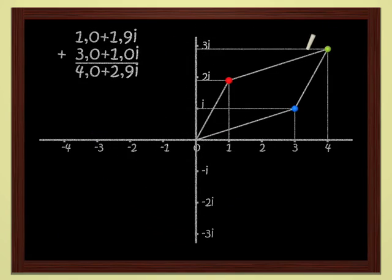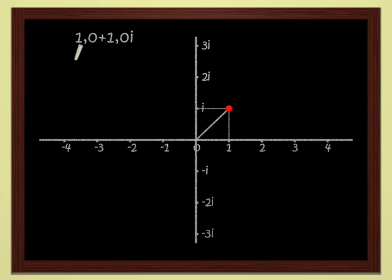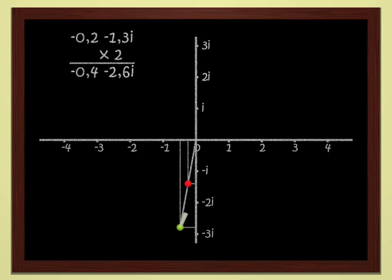Much more interestingly, these complex numbers can also be multiplied, just like real numbers. Let's see. We know how to multiply a complex number by 2, for instance. 2 times 1 plus 2i gives 2 plus 4i. Geometrically, multiplying by 2 is easy. It's just scaling up by a factor of 2. If we double the red point, we get the green point.